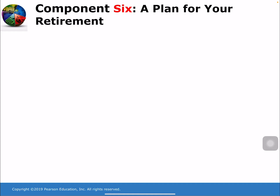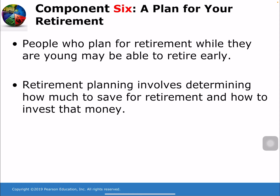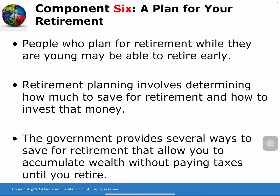Component 6 of the seven components is a plan for your retirement. People who plan for retirement while they're young may be able to retire early. Retirement planning involves determining how much money to save for retirement and how to invest it. The government provides several ways to save for retirement that allow you to accumulate wealth without paying taxes until you retire.